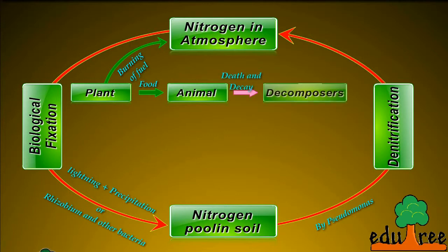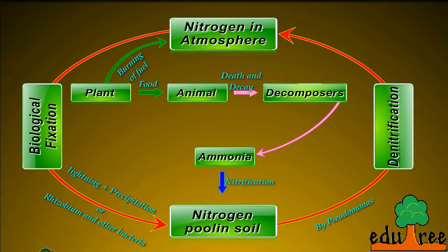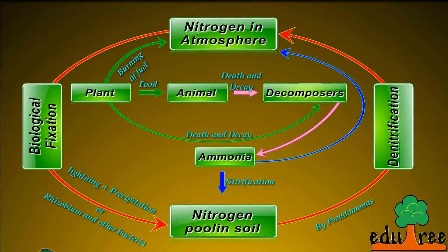Plants provide food to animals and transfer nitrogen in various forms to them. When animals die, the proteins are broken down by the action of bacteria and fungi called decomposers. This process of ammonification produces ammonia, which returns to the soil pool through nitrification, and also returns to the atmosphere. Similarly, when plants die, the proteins are broken down by decomposers through ammonification, producing ammonia. Animal proteins are excreted out in the form of urea, uric acid, or ammonia.